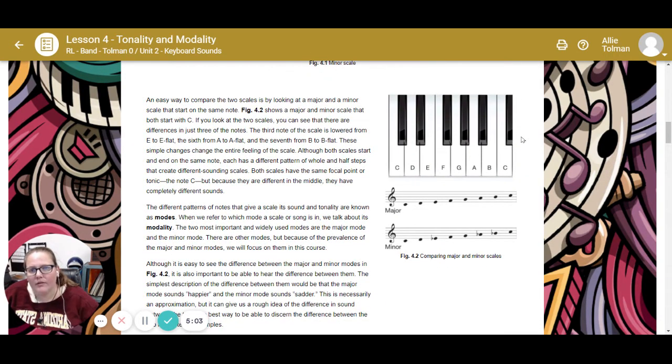An easy way to compare the two scales is by looking at a major and a minor scale that start on the same note. This shows a major and minor scale that both start with C. There are differences in just three of the notes. The third is lowered from E to E-flat, the sixth from A to A-flat, and the seventh from B to B-flat. Both scales have the same focal point or tonic, the note C, but because they are different in the middle, they have completely different sounds.